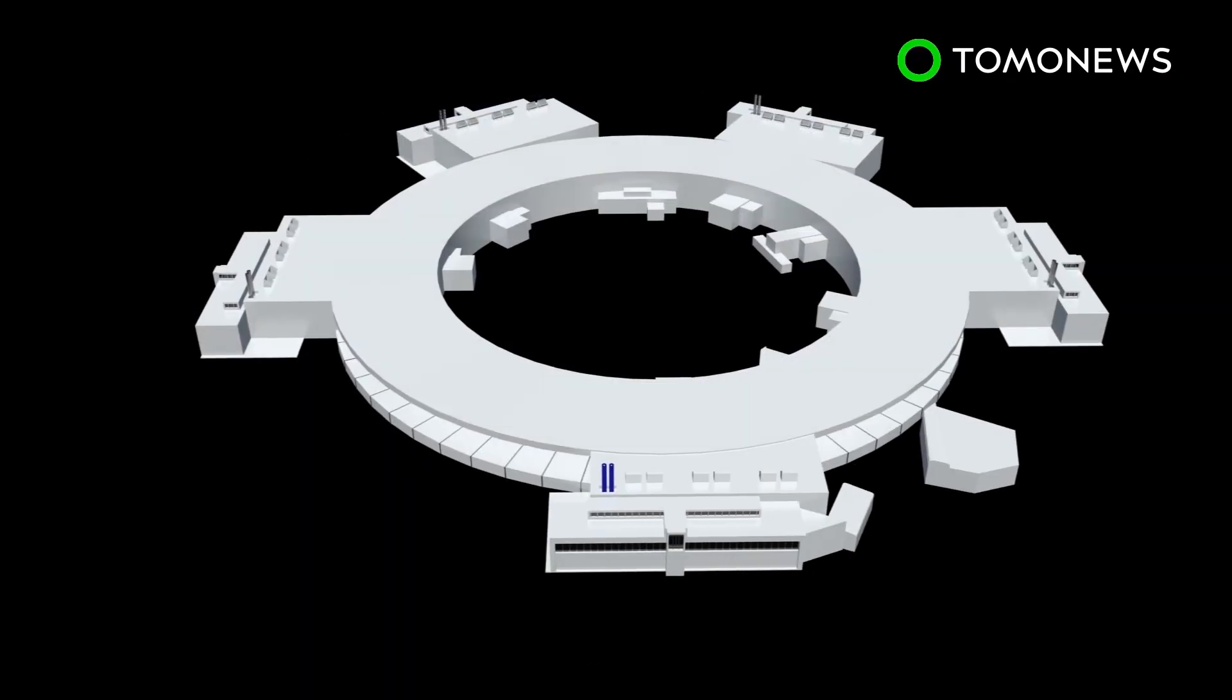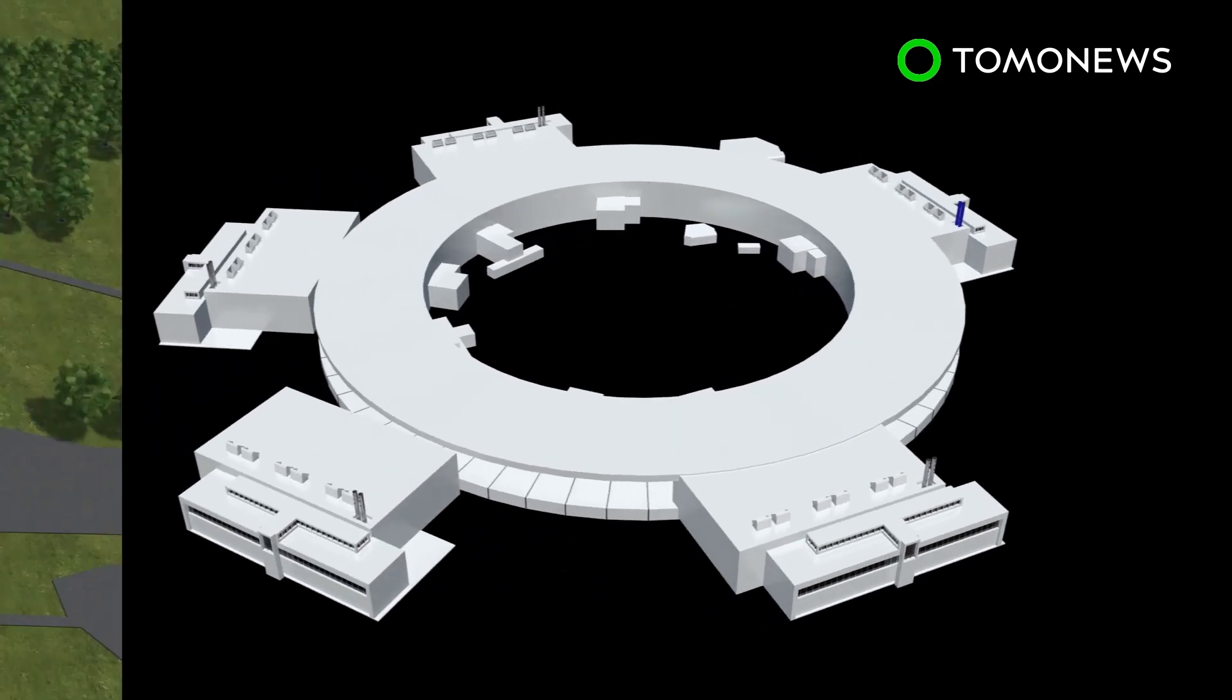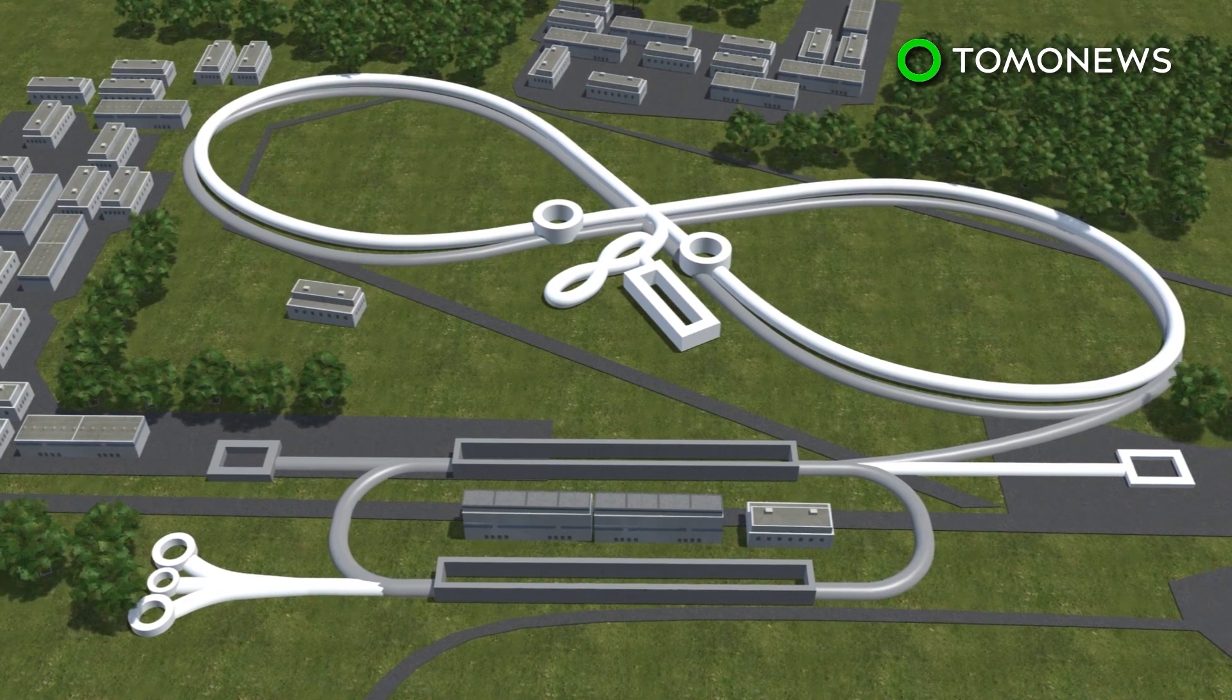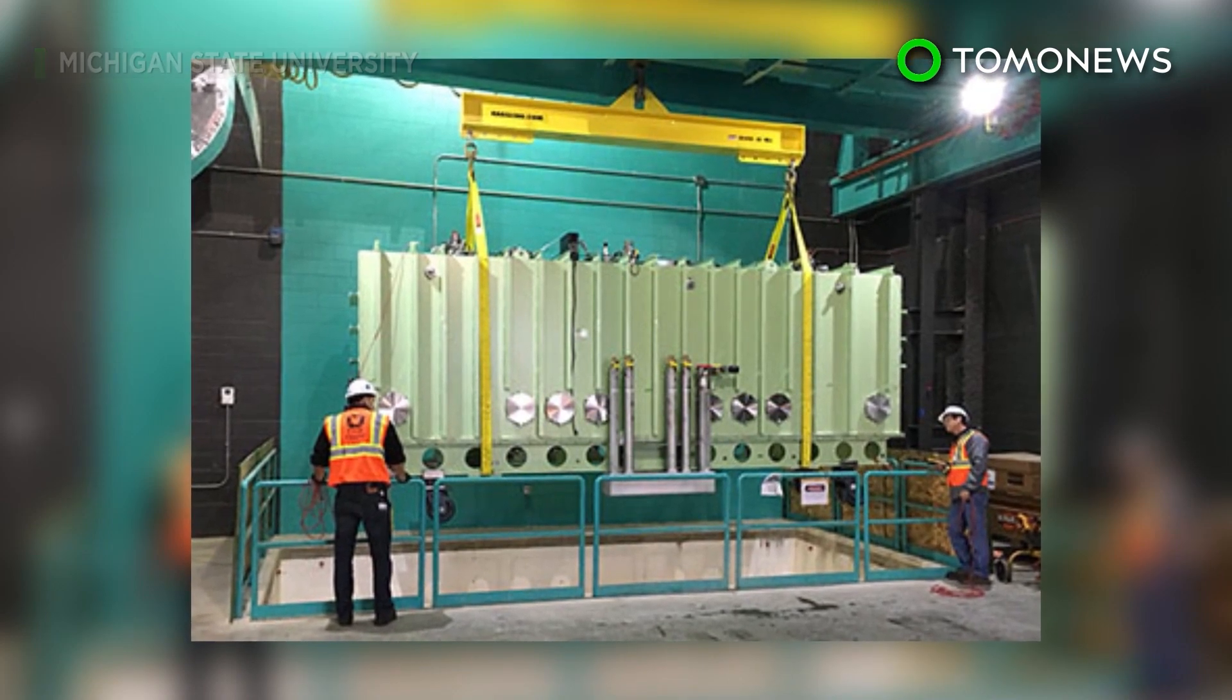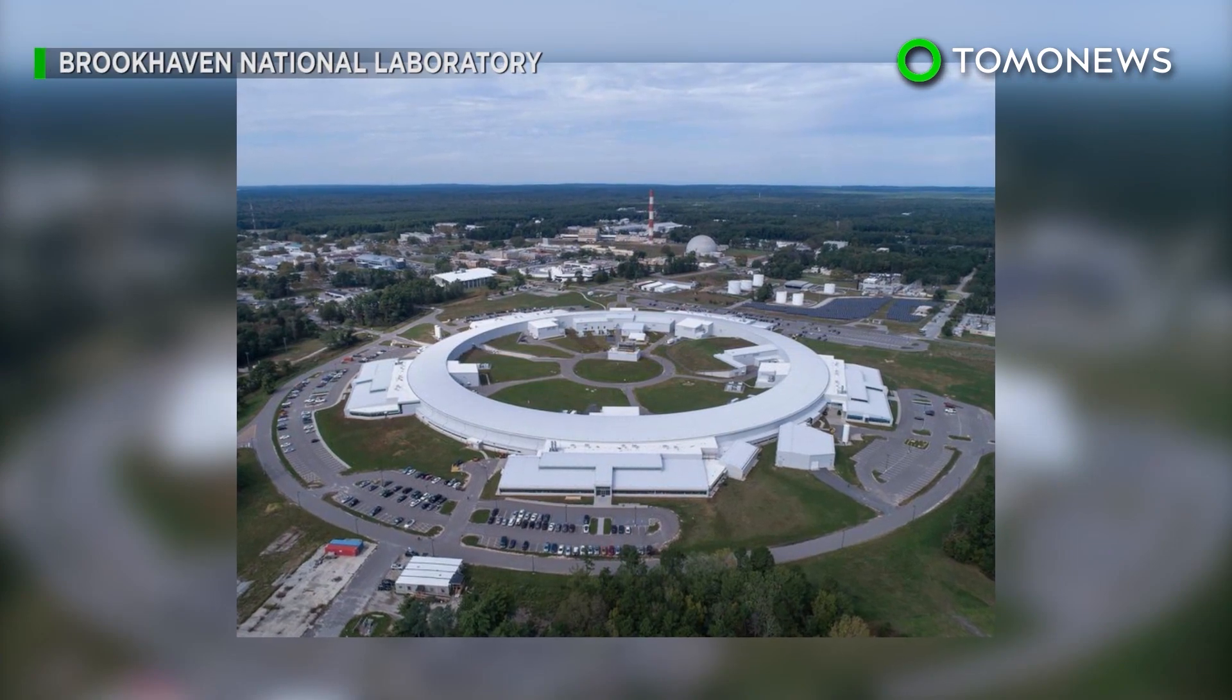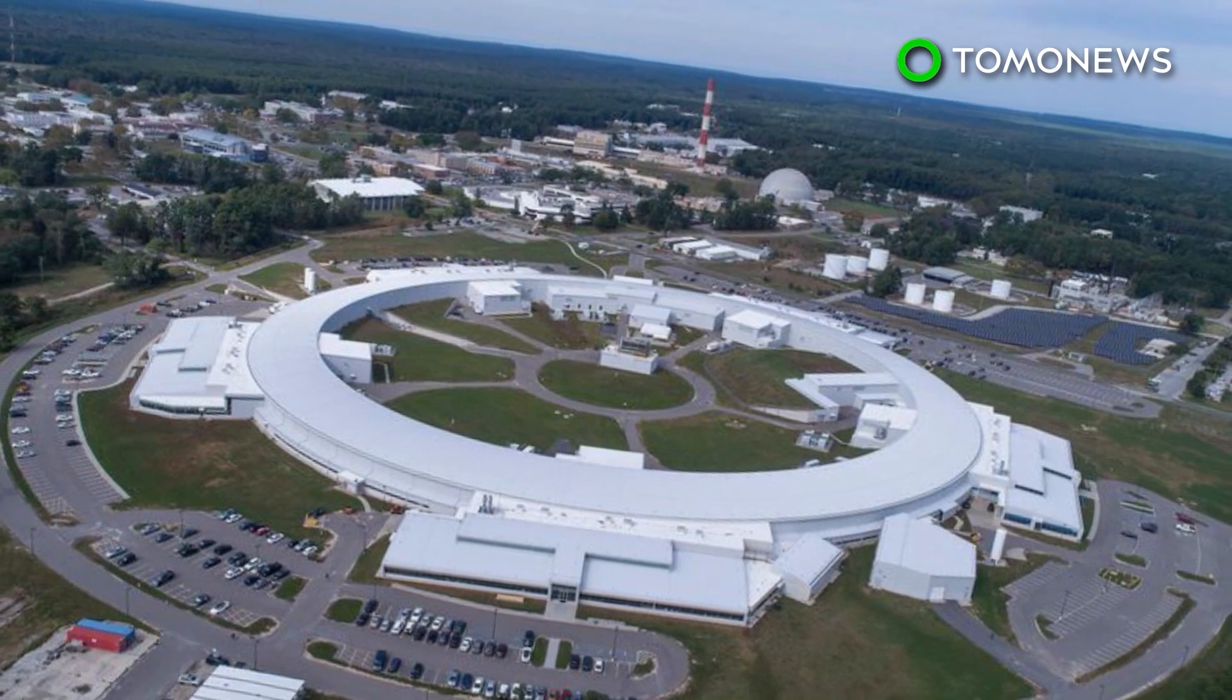Two facilities have submitted proposals to host the EIC. Brookhaven National Laboratory has a proton accelerator but no electron ring, while Jefferson Lab has the electron accelerator but will need a proton ring. The Department of Energy is currently building a 730 million U.S. dollar facility for rare isotope beams and may not be able to fund the proposed collider until after 2020. So for now, the two labs are collaborating on R&D.